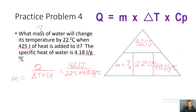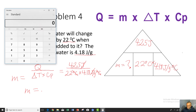To solve for mass, cover M in the triangle: the formula becomes Q divided by (change in temperature times specific heat). Plugging in: 425 joules divided by (22 degrees Celsius times 4.18 joules per grams degrees Celsius). Cross out like units: joules cancel joules and degrees Celsius cancel degrees Celsius, leaving grams.